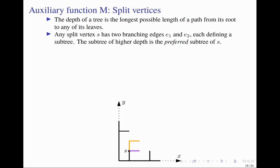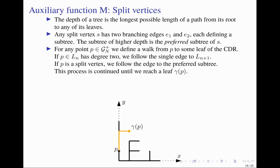We call a vertex of degree 3 a split vertex. Any split vertex has two branching edges, each defining a subtree. The subtree of higher depth is the preferred one; in case of a tie, the subtree to the right is preferred. For any grid point in our domain, we define a walk to a leaf of the CDR: if the point has degree 2, we follow the single edge to the next layer; if it is a split vertex, we follow the edge to the preferred subtree. We continue until we reach a leaf, which we call γ. If p has degree 2, we define m(p) as the value of m at the leaf γ.